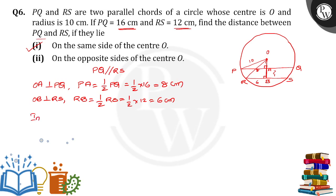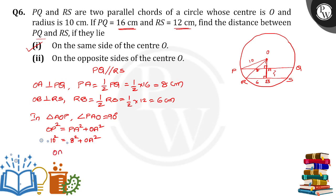Now taking triangle AOP: angle PAO is equal to 90 degrees, so we can apply the Pythagoras theorem. OP² = PA² + OA², so 10² = 8² + OA², meaning OA² = 100 − 64 = 36. Therefore OA is equal to the square root of 36, which is 6 centimeters.